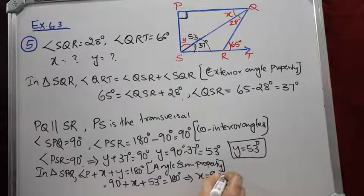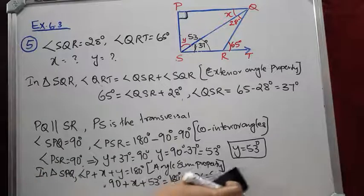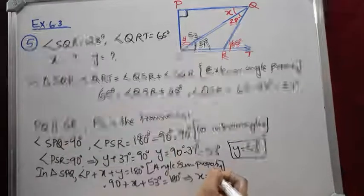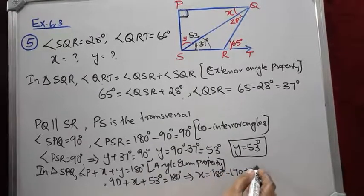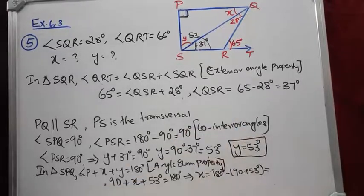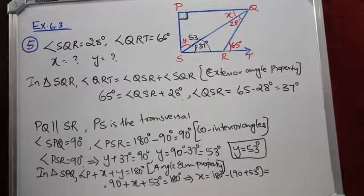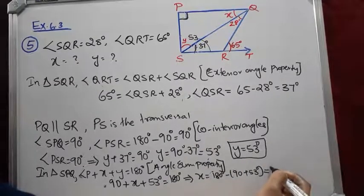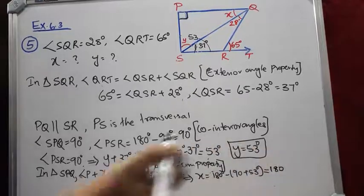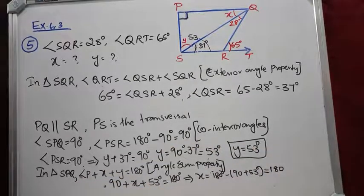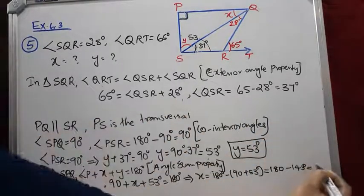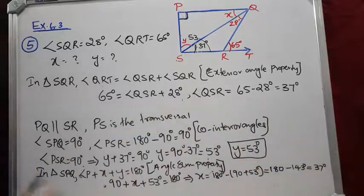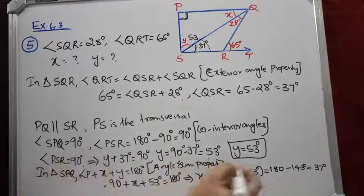So X = 180 minus (90 + 53) = 180 minus 143 = 37 degrees. Therefore, X = 37 degrees.